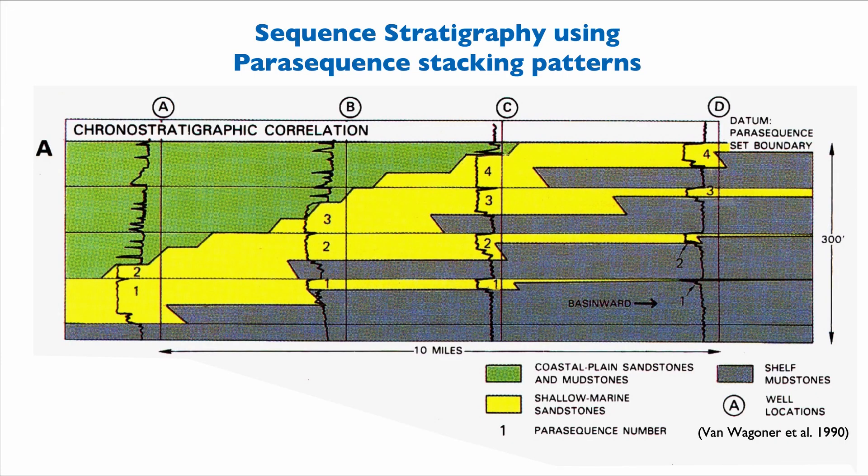In this example, we have four wells—well A, B, C, and D. All we have as information is this log here, the four logs of the four wells. We don't really have the connection between these different bodies. The connection is really our interpretation.